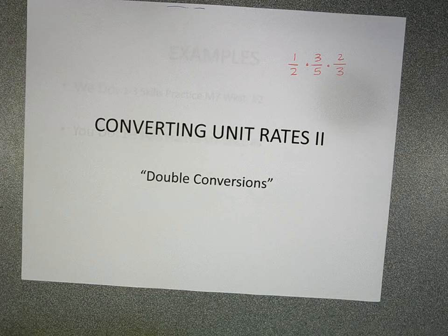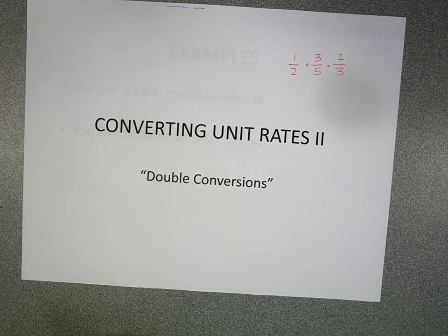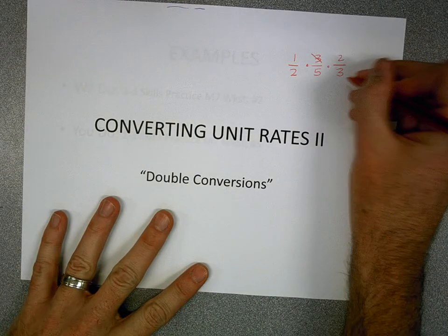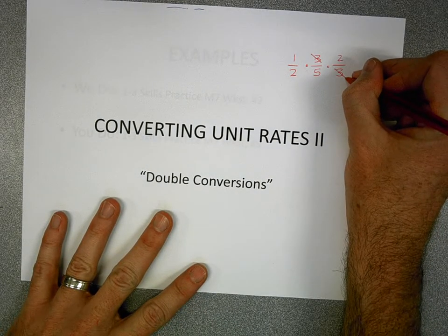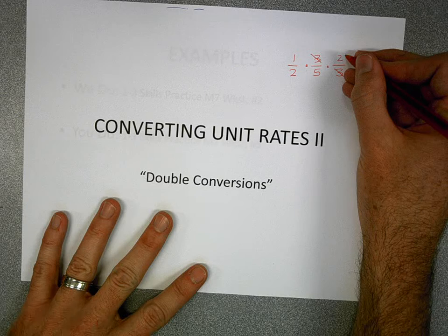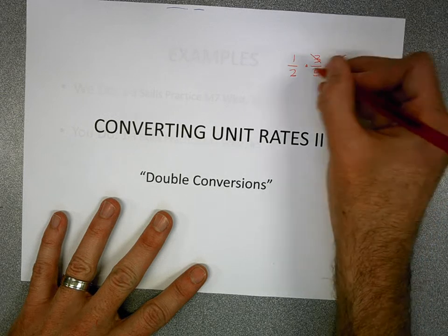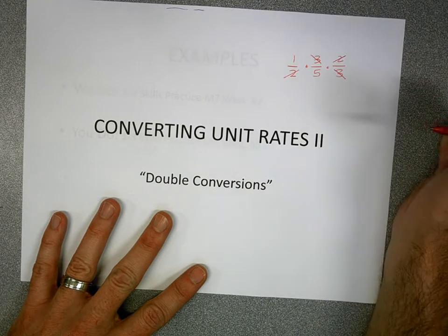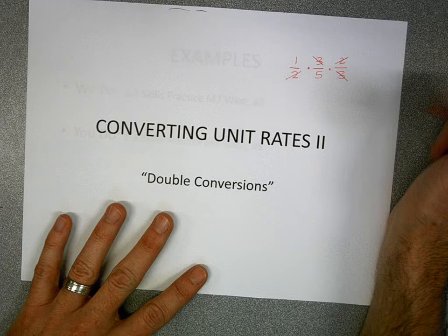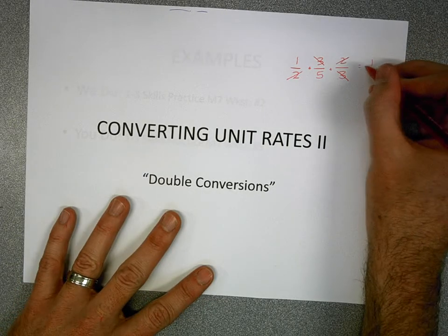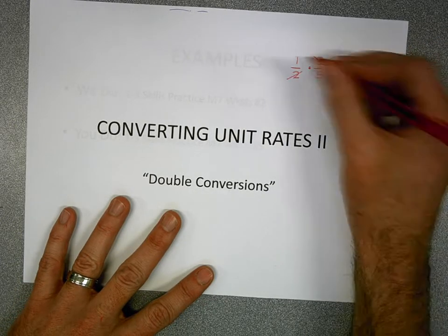Remember, when you multiply fractions, you multiply straight across. You can actually cross-reduce or cross-cancel. But you can also cross-reduce way over here — not just with neighbors. And some of you are wondering the answer: it's one-fifth.